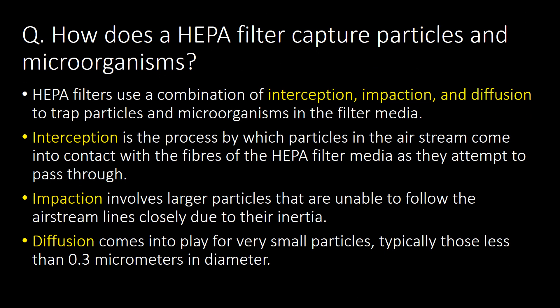How does a HEPA filter capture particles and microorganisms? HEPA filters use a combination of interception, impaction, and diffusion to trap particles and microorganisms in the filter media. Interception is the process by which particles in the air stream contact the fibers of the HEPA filter media as they pass through. Impaction involves larger particles that cannot follow the air streamlines closely due to their inertia. Diffusion comes into play for very small particles, typically those less than 0.3 micrometers in diameter.